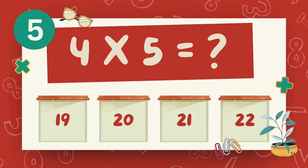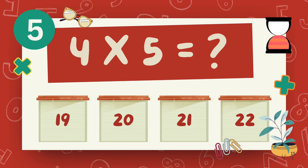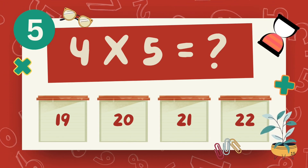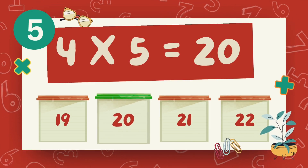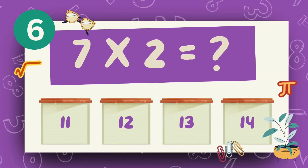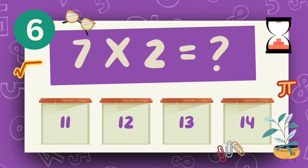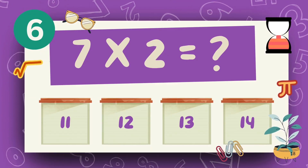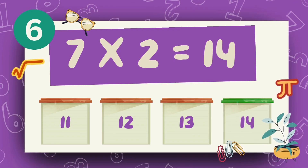What is 4 multiply 5? The answer is 20. What is 7 multiply 2? The answer is 14.